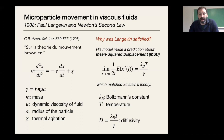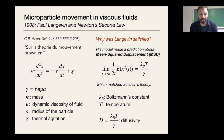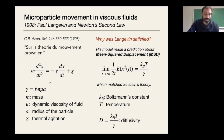Langevin makes a statistical argument, treating this as an ODE with forcing, and eventually his prediction matches Einstein's result on the mean squared displacement. For a random walk, it had been known that variance grows linearly in time. His prediction involves kT — Boltzmann's constant times temperature, the fundamental unit of energy in equipartition — divided by the drag coefficient gamma. The more drag in the system and the thicker the viscosity, the less particles move.